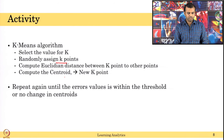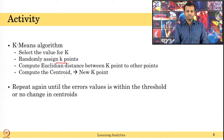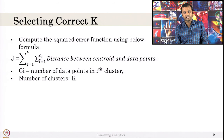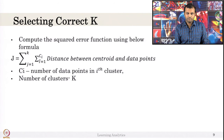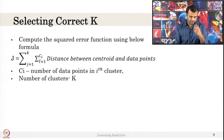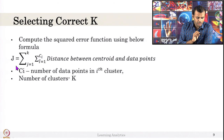If you have not written down these steps, please watch the video again or check internet resources — there are good simulators available showing how K points move and are computed. Now we have to see how to select the correct number of K. In order to select the correct number of K, you first need to identify the error function — also called the objective function J. The error function J is the distance between centroids and data points.